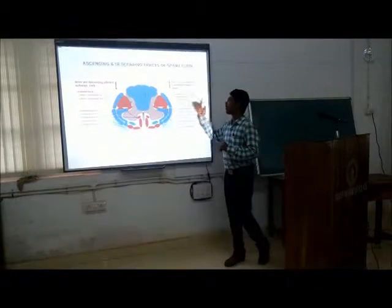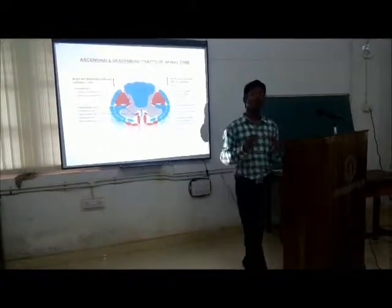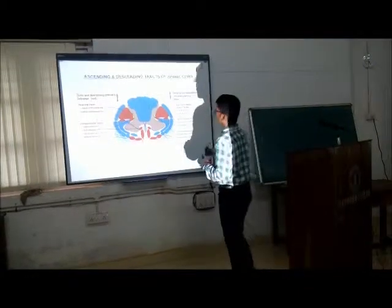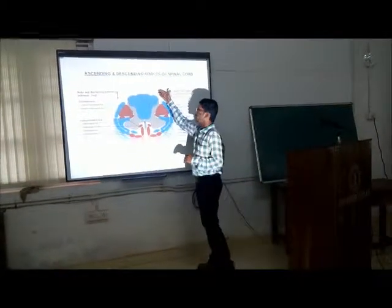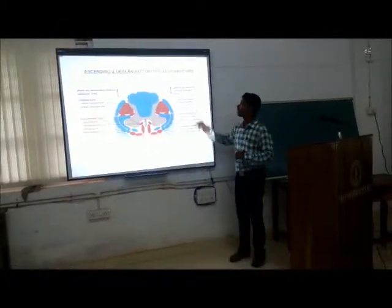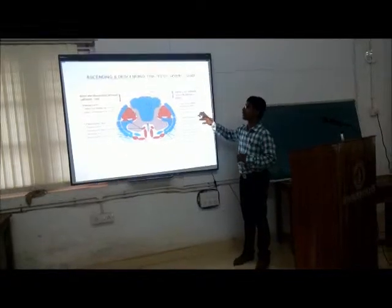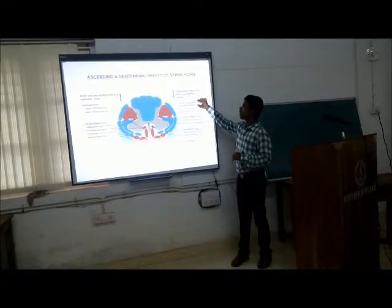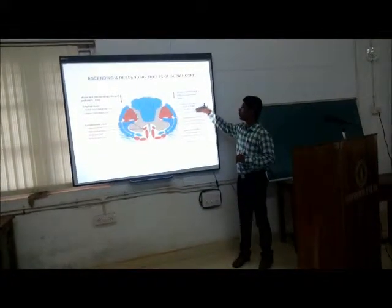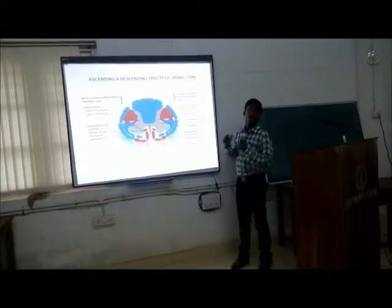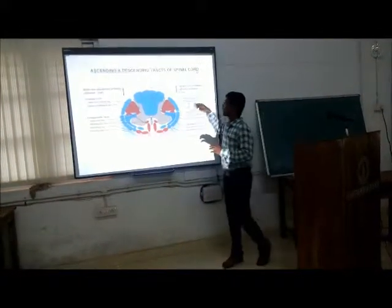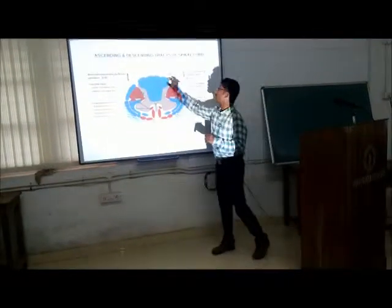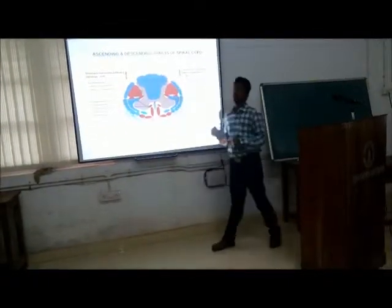The first one is called the dorsal column medial lemniscal system, because this system is present in the dorsal surface of the spinal cord. This is the dorsal part and this is the ventral part. The dorsal column medial lemniscal system is arranged in the dorsal part and is divided into two minor tracts called the gracilis fasciculus and the cuneatus fasciculus.